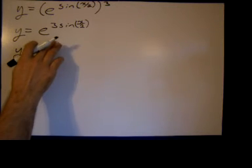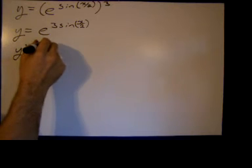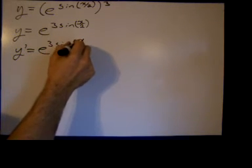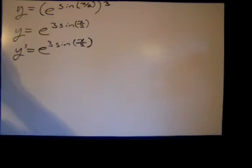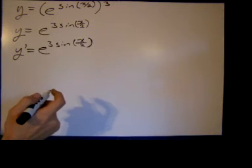So y prime, the derivative of e raised to anything, it's just a copy of itself. So we have e raised, and then if you know anything about bases other than e, it's just times the ln of the base. Well, the ln of e is just 1, so that's why we don't write it.